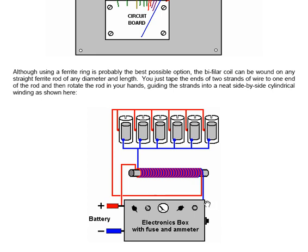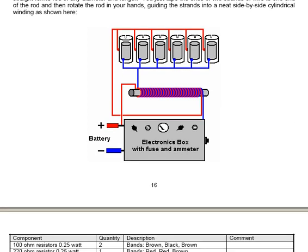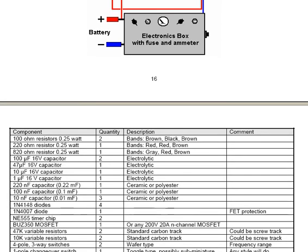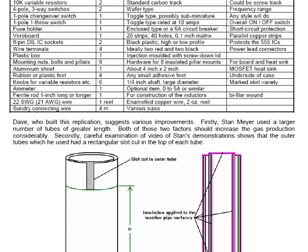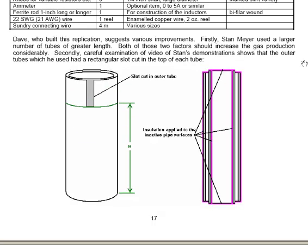Firstly, Stan Meyer used a larger number of tubes at greater length. Both of those two factors should increase the gas production considerably. Secondly, careful examination of video of Stan's demonstrations shows that the outer tubes which he used had a rectangular slot cut on the top of each tube. Some organ pipes are fine tuned by cutting slots like that in the top of the pipe to raise its pitch, which is its frequency of vibration.